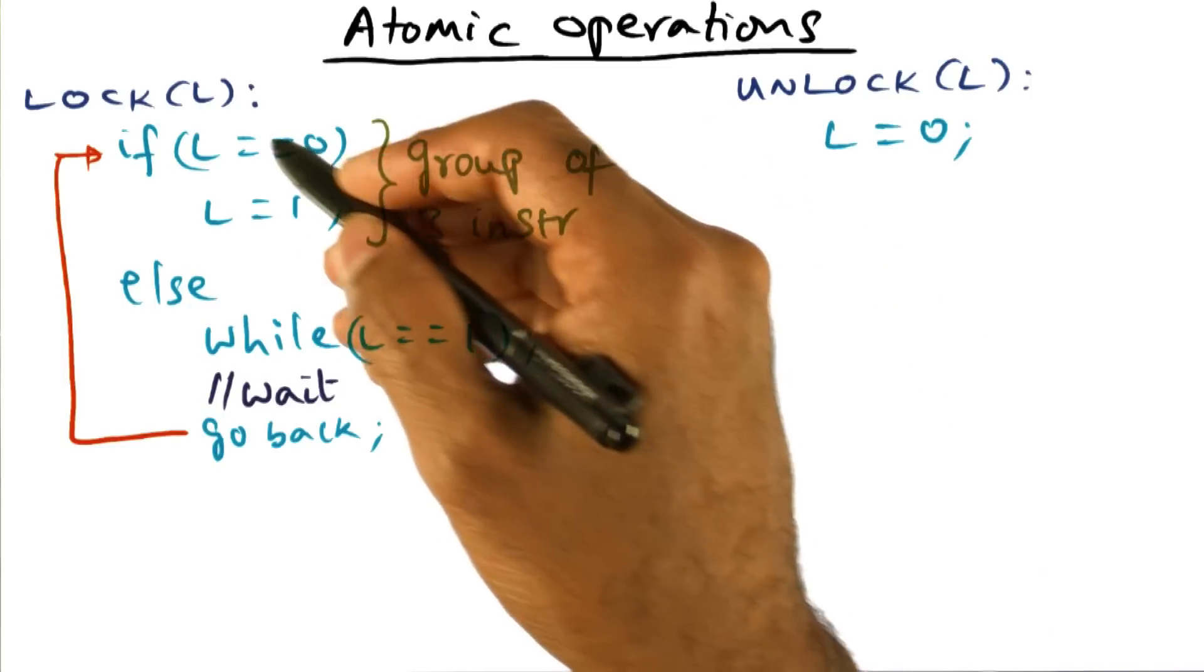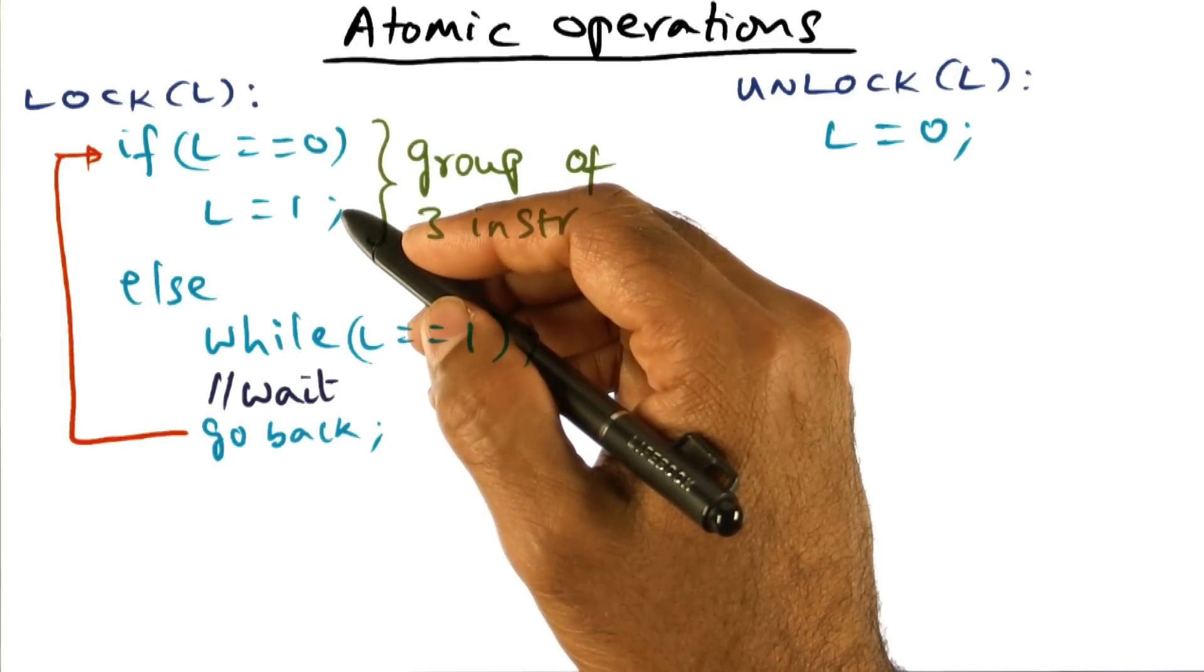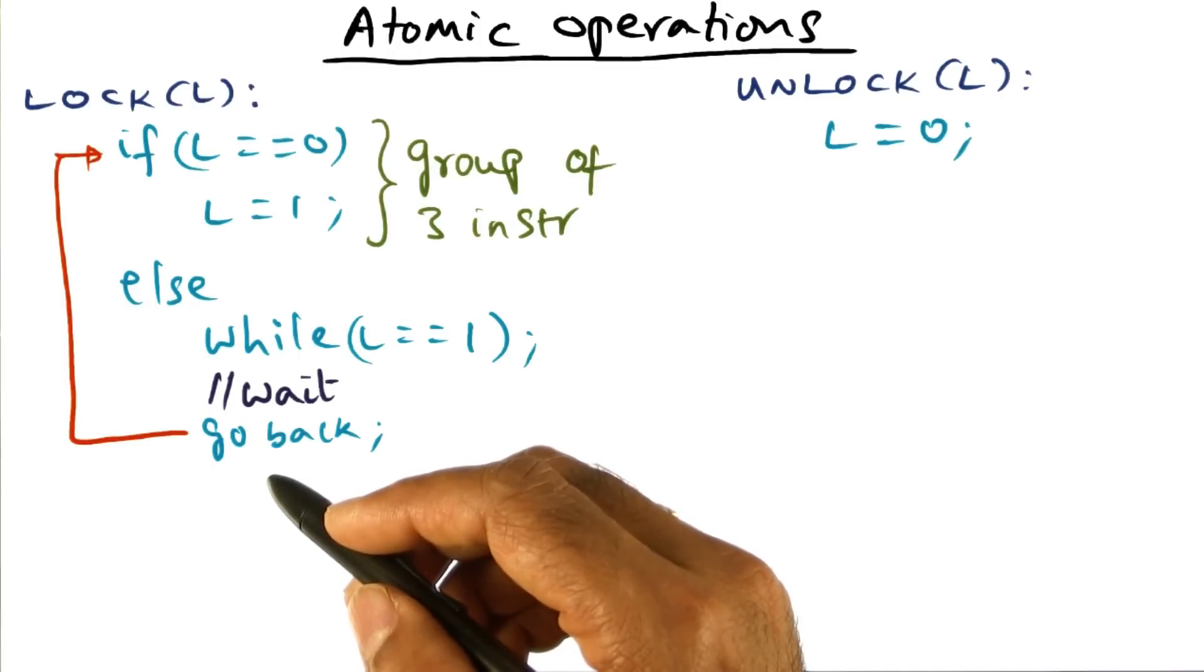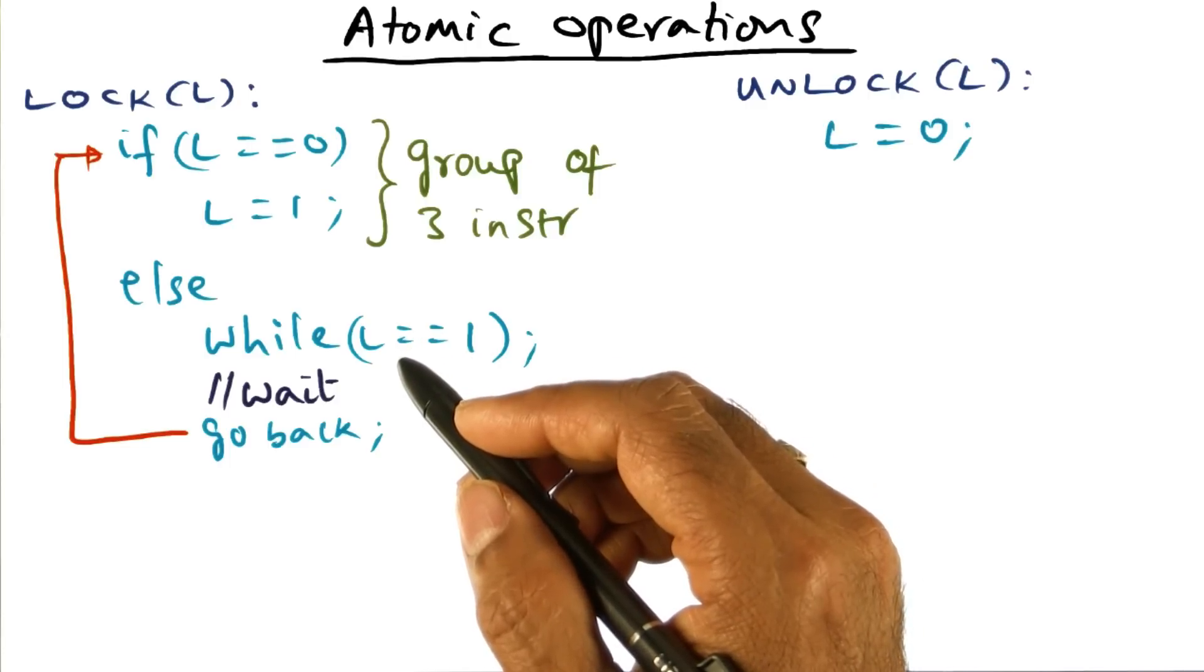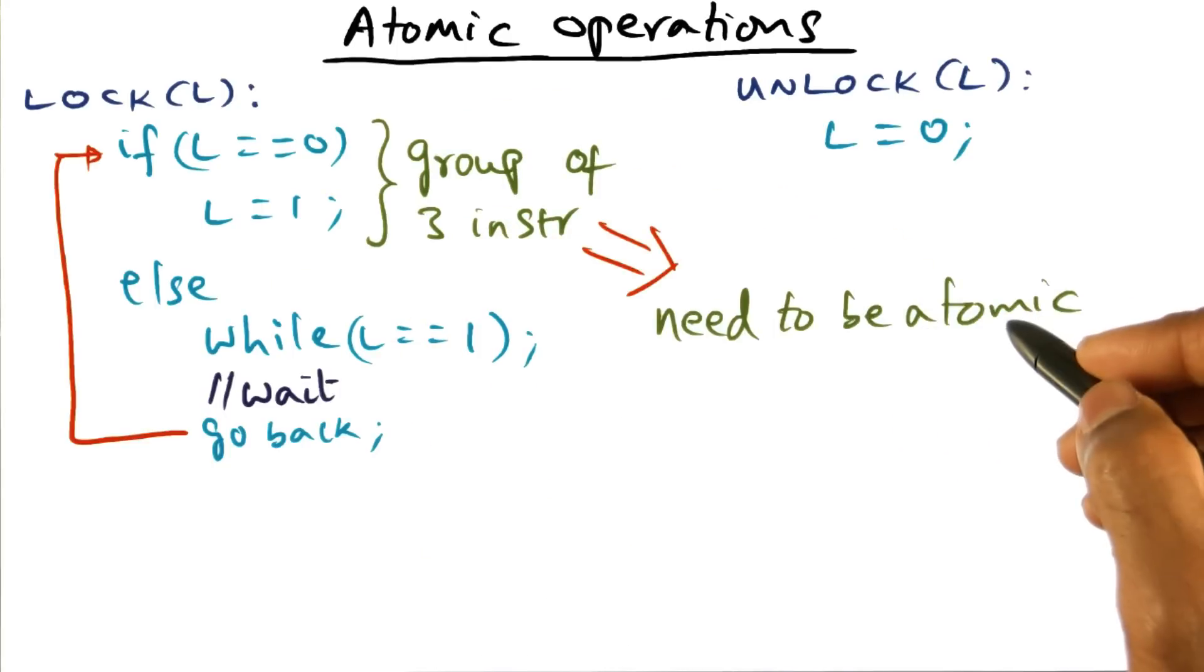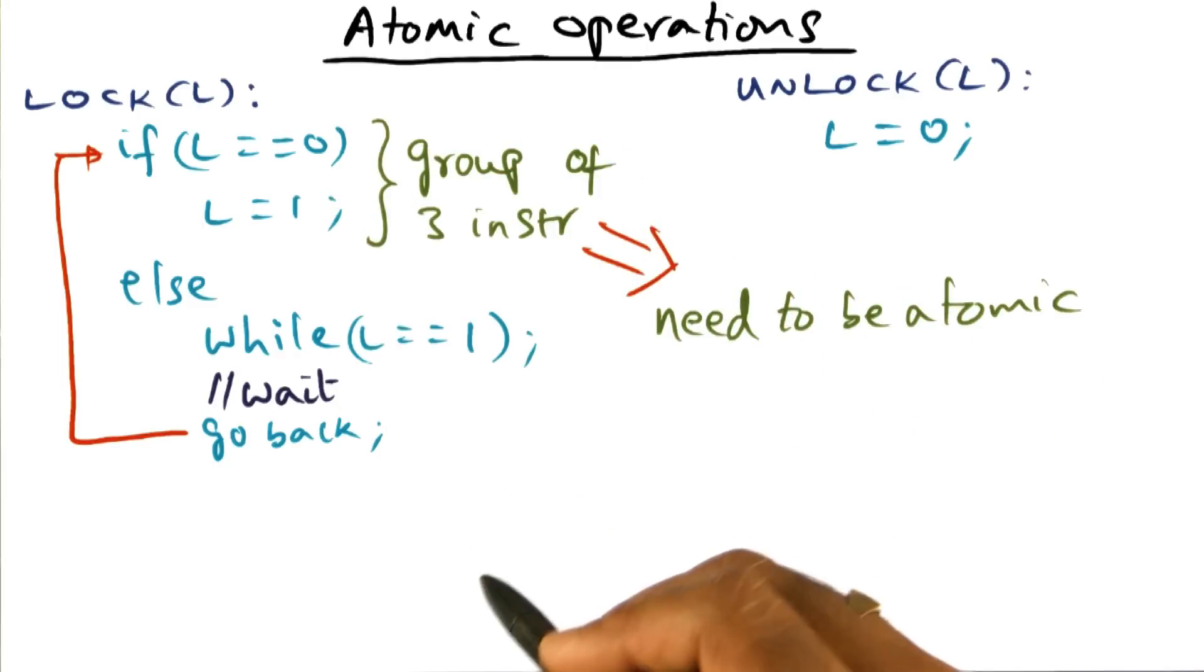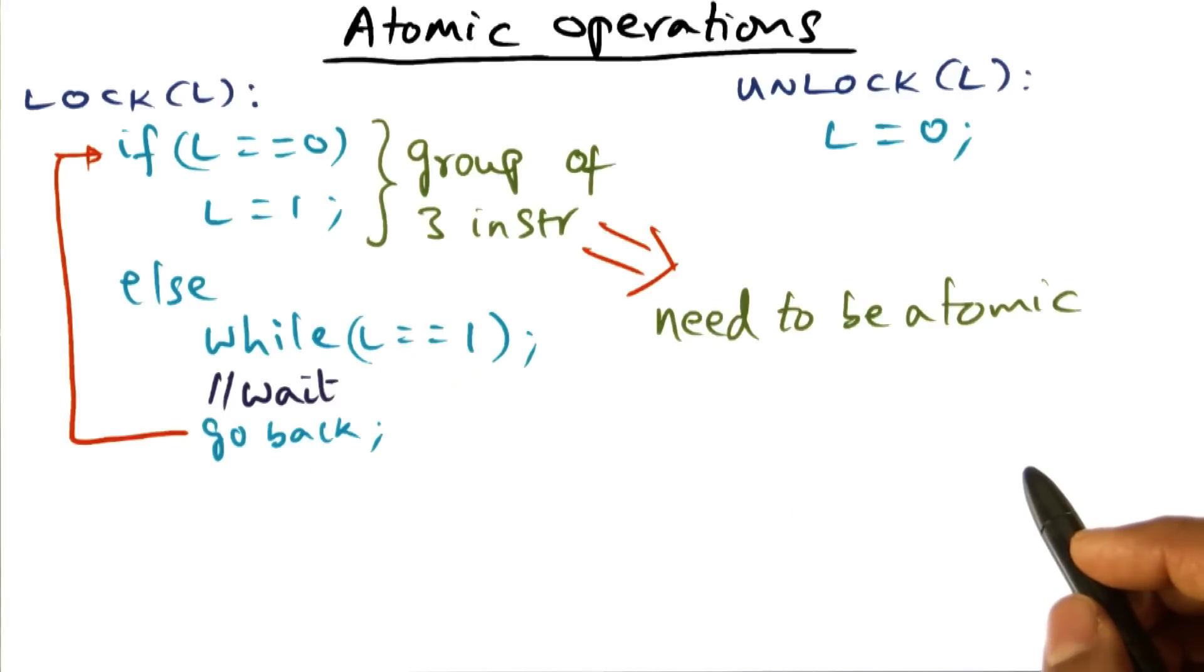So it's a group of three instructions that the processor has to execute. And the key thing is, these three instructions have to be executed atomically in order to make sure that I got the lock and nobody else is going to interfere with my getting the lock. And as we know, reads and writes instructions by themselves are atomic, but a group of reads and writes are not atomic. And therefore, what we have here is a group of three instructions, and we need them to be atomic. What that means is, we cannot have just reads and writes as the only atomic operations if we want to implement this lock algorithm.